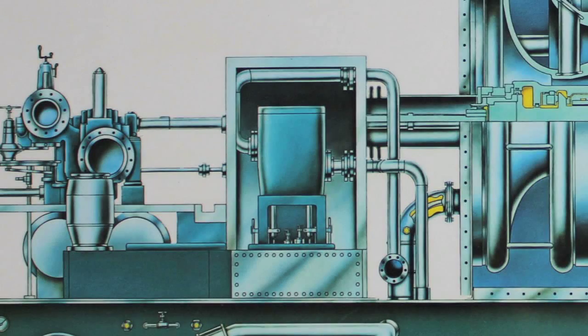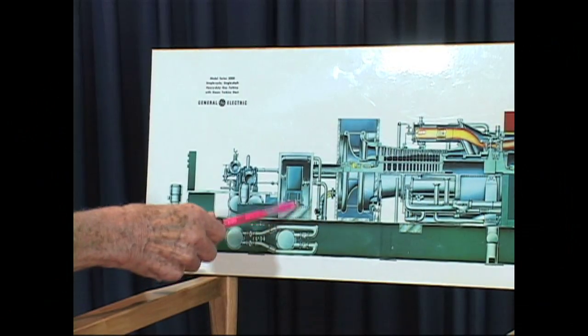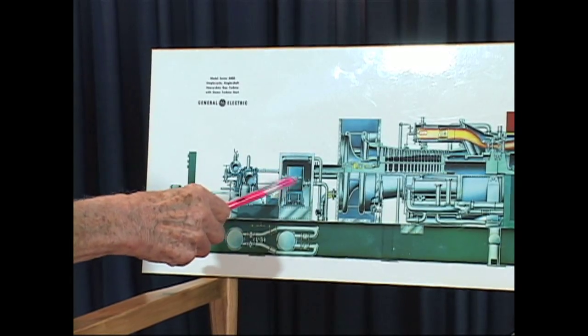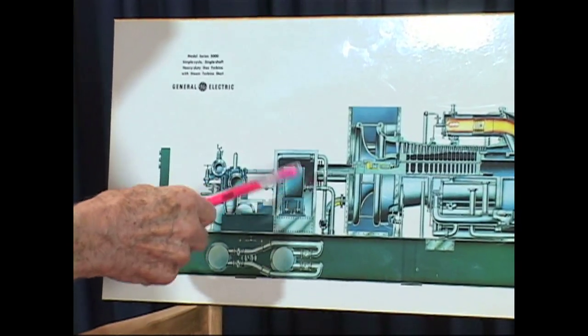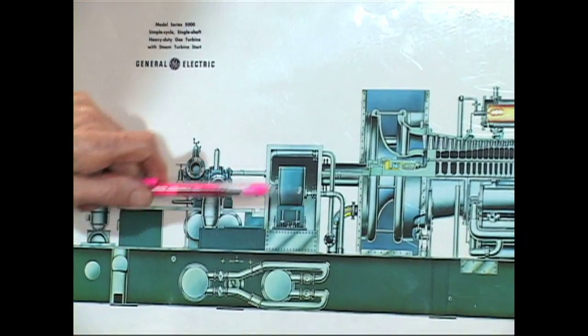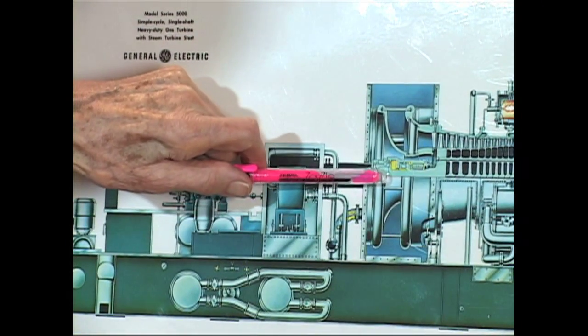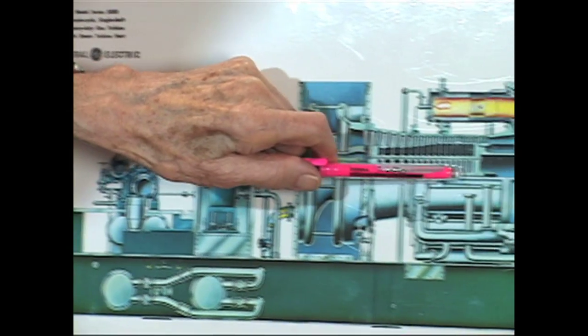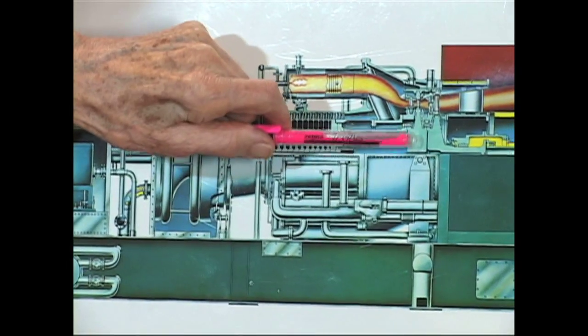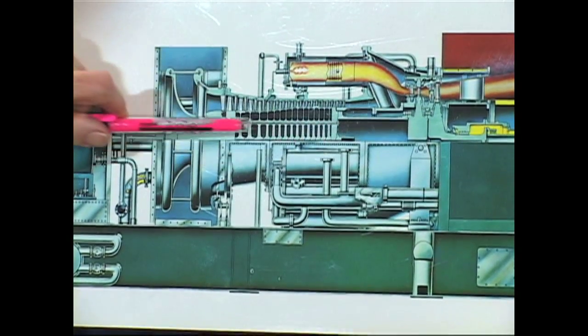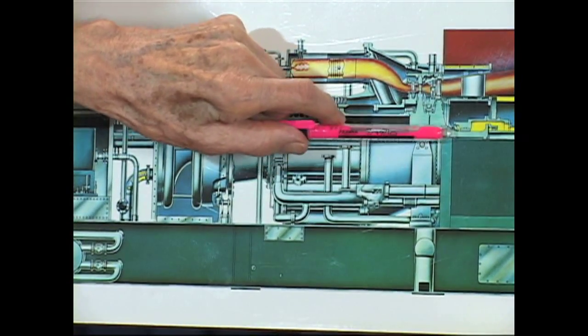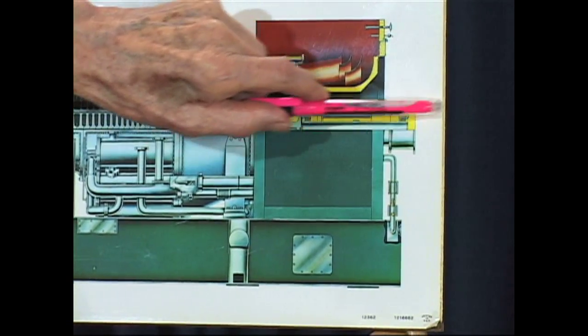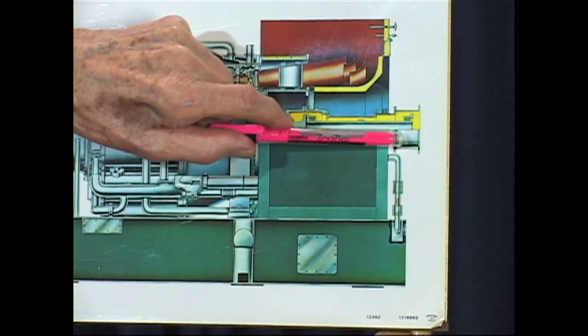To start it up it uses a starting motor or turbine to rotate the shaft. The shaft of the turbine is here. This part is a compressor and these two stages is a turbine all on one shaft. And out the end comes the coupling where you put your generator or compressor or whatever you want to drive.